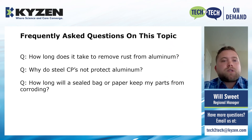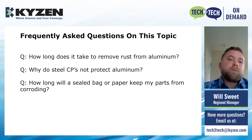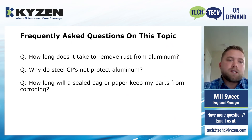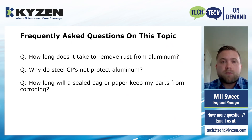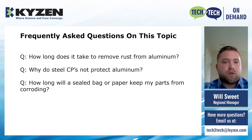Why do steel corrosion protectors not protect aluminum? The short answer is they're simply not designed for aluminum — different metals require different chemistry components to match up and stick on the surface. The longer answer is that many steel corrosion protectors have higher alkalinity, and we've mentioned that aluminum does not like high alkalinity — it can actually eat away at the metal itself. That's why you need a different type of corrosion protector for aluminum parts than you do for steel.